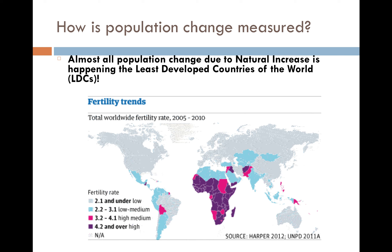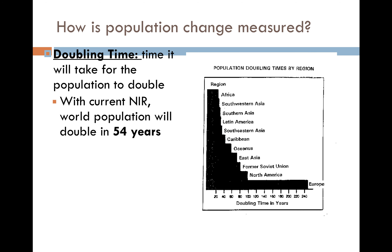Almost all of the population change happening in the world due to natural increase — not migration, just births and deaths — is occurring in the least developed countries of the world, which is truly significant. The population is increasing the most in the places least able to provide for those people. In our globalized society, this is why businesses find it so advantageous to go to these lesser developed countries where people truly need jobs. It makes the story of globalization even more complex — multinational corporations come into places where population is booming and jobs are needed, but those people are not offered the same quality of life as in other parts of the world.